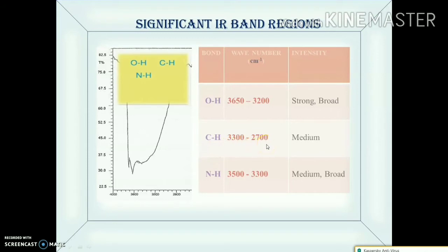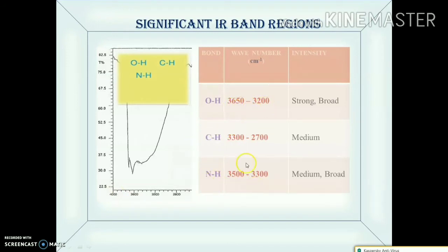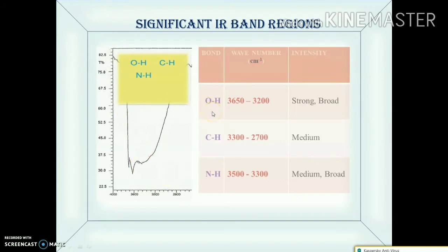The CH stretching band in the region of 3300 to 2700 centimeter inverse is a medium band. The strong, medium, and weak band designations refer to the amount of change in dipole moment. The NH and OH bands lie in the same range of 2500 to 4000 centimeter inverse, although their individual frequency values differ somewhat. The major difference is that the OH band is a strong, broad band, whereas the NH band is a medium broad band. So a very strong, deep dip indicates the presence of an OH group.